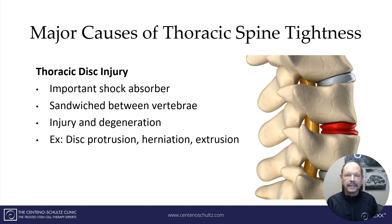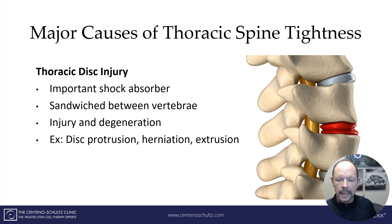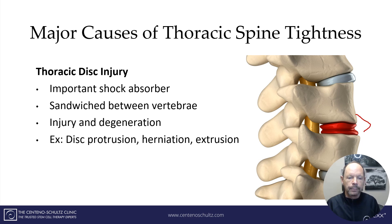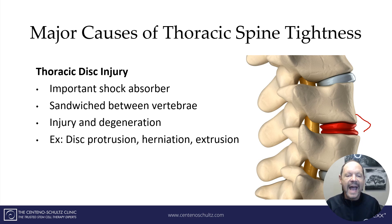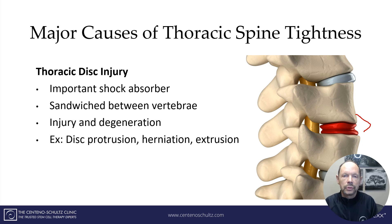Number one is a thoracic disc injury. The thoracic disc is a very important shock absorber, depicted here in red. It's sandwiched between the vertebral bodies and is susceptible to injury and degeneration. Common examples include a disc protrusion, a disc herniation, or a disc extrusion. All of these can cause thoracic spine tightness.